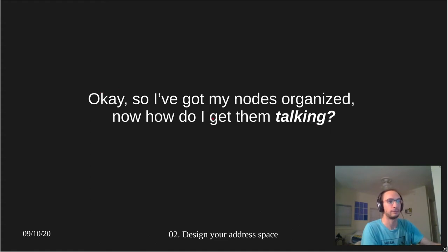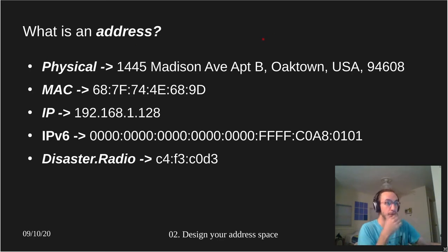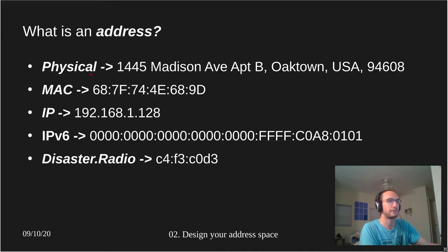Once you have your nodes organized, how do you get them talking? Like starting a conversation, you introduce yourself — you say your name. You need to be able to identify other nodes in the network, and to do that you need an address. In the physical world, an address is straightforward — where do you live? In computers, addresses are a little more abstracted, often represented with numbers or hexadecimal, as MAC addresses are. This is just a variety of examples.